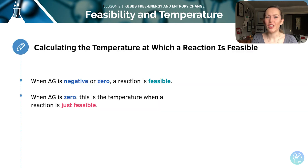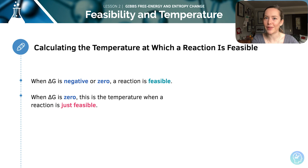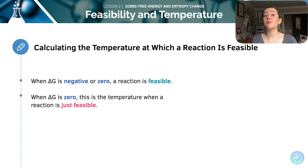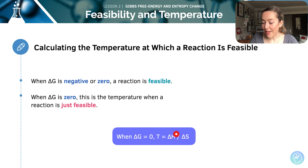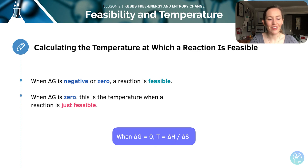The equation for the Gibbs free energy change is really useful because we can use it to work out the temperature at which a reaction is feasible — which has very useful applications for chemical engineering and all sorts. When the Gibbs free energy change is negative or zero, it is feasible. When the Gibbs free energy change is zero, this is the temperature at which the reaction is just feasible. Therefore, when delta G equals zero, T is equal to the enthalpy change over the entropy change. Rearranging that equation can be really helpful.